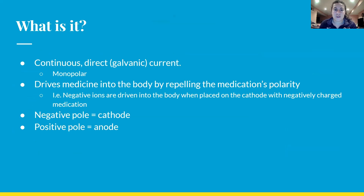So what exactly is iontophoresis? These are the important things to know. It's a continuous, direct — or sometimes it'll be referred to as galvanic — current. It's monopolar, so that means one pole is active.